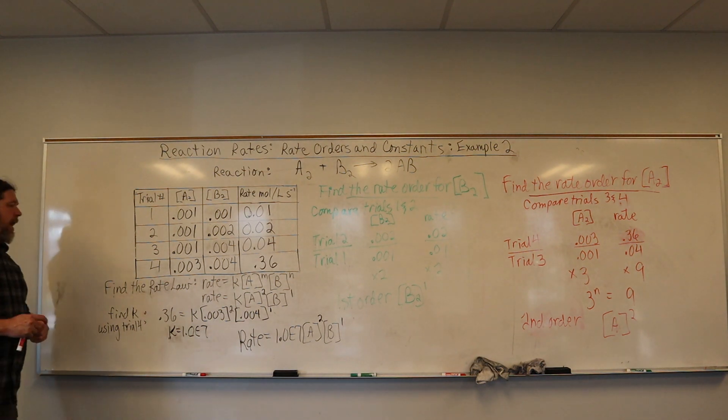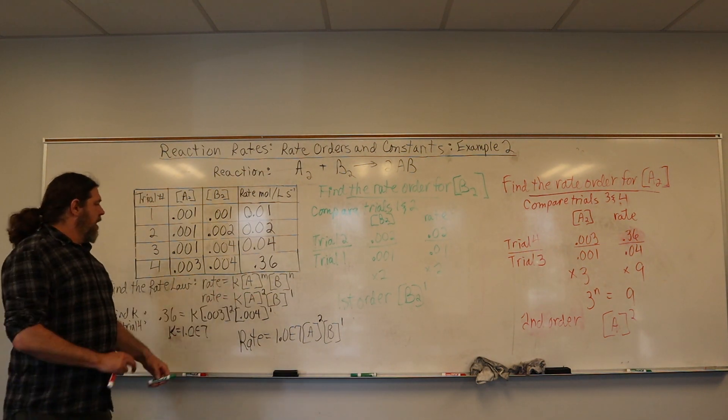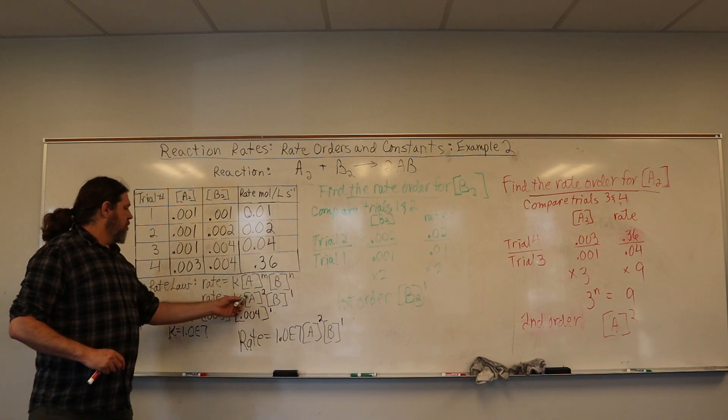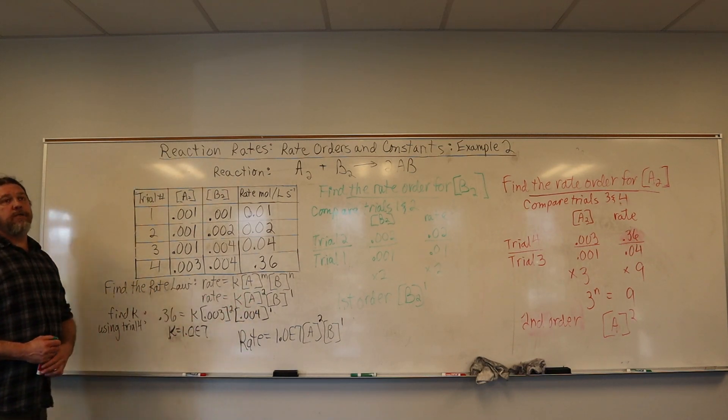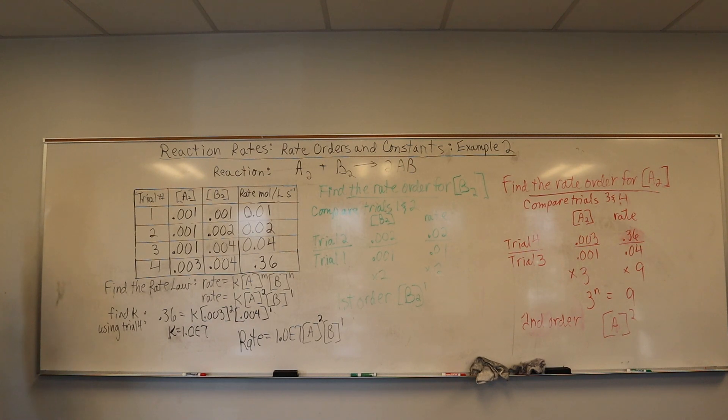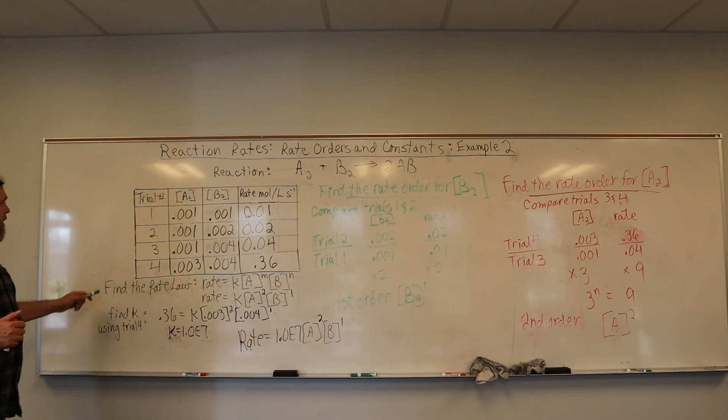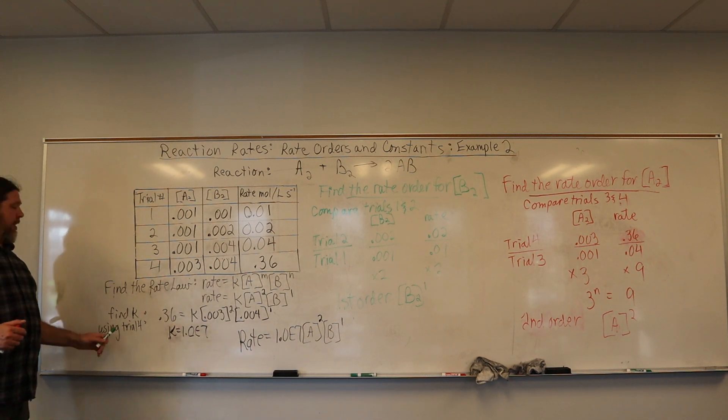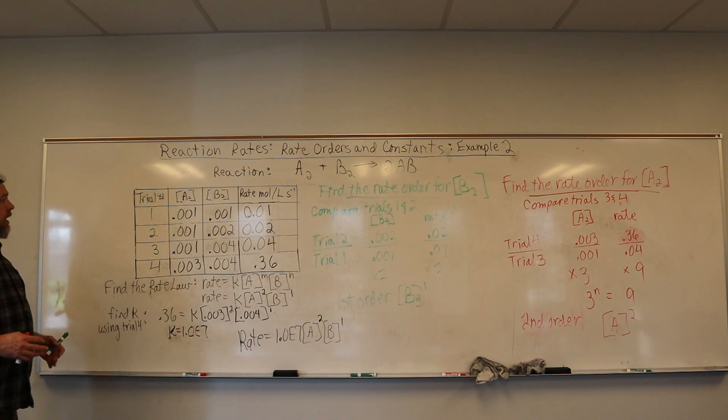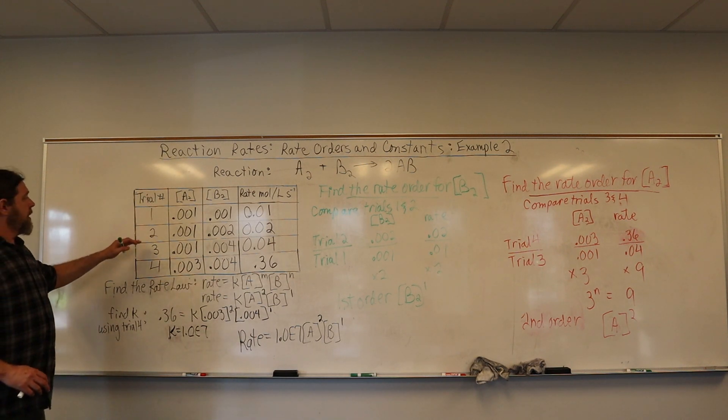So we now have sort of a skeleton of the actual rate. And what's missing is the constant. So constants mean what they say. No matter how we're changing the reactants, there is a multiplying factor that helps make this reaction work mathematically. And so we can simply plug in the data from any trial and solve for the constant because, if it's a constant, we should get the same answer.